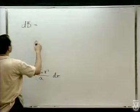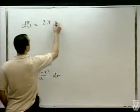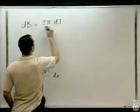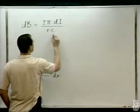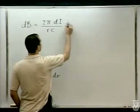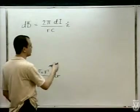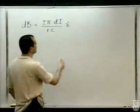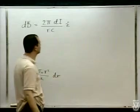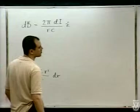אנחנו יודעים ששדה של טבעת במרכז זה שני פאי DI חלקי RC, והכיוון הוא ניצב ללולאה לפי כלל ימין. עם הבחירה הטבעית של מישור XY, אז הכיוון הוא Z. ככה בחרנו גם את כיוון הסיבוב.